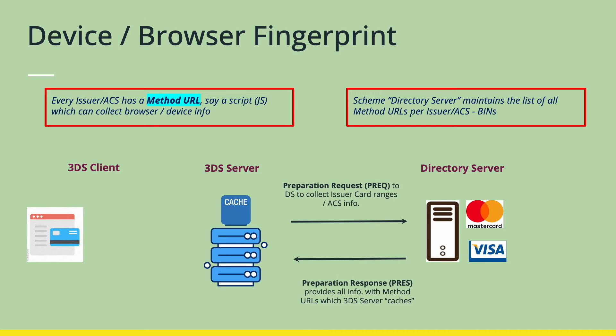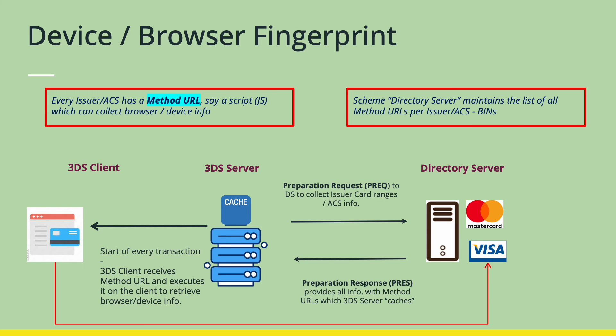So when a new transaction is being initiated from the 3DS client — meaning the browser or the app from where the transaction is being initiated — the 3DS server provides the Method URL information based on the card BIN entered. At the start of every transaction, when we enter the card number, depending on the card BIN, the 3DS server retrieves the Method URL and provides that information to the 3DS client. The 3DS client then executes the script and provides the information back to the ACS issuer for every single transaction.